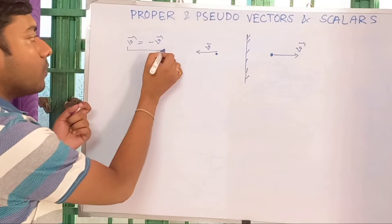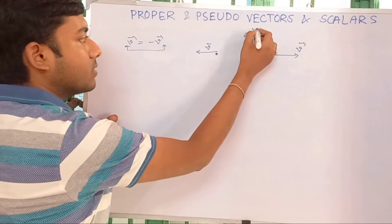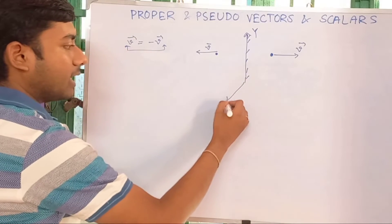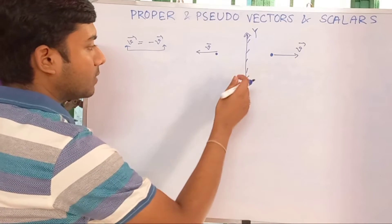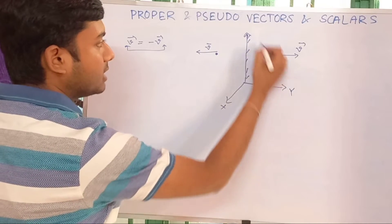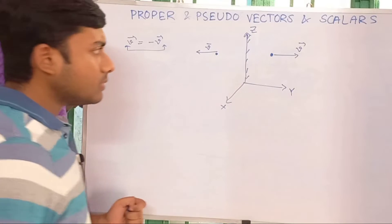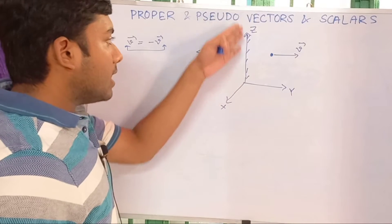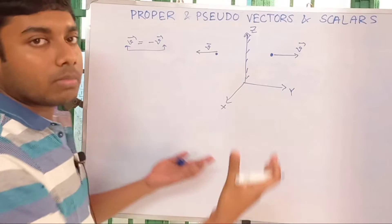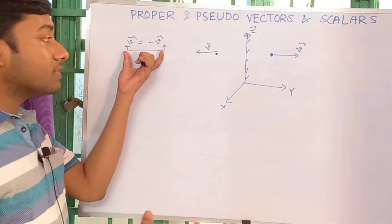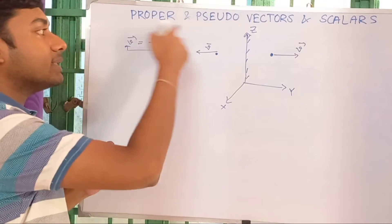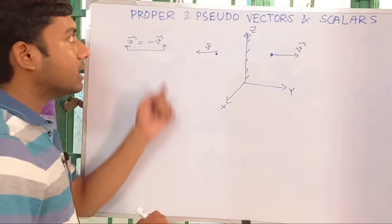Suppose this is our y-axis, x-axis, and z-axis. If the mirror is placed about the z-axis — in the xz-plane — then for normal vectors, if this type of transformation happens for any vector, then you can say that vector — like our velocity vector — is a proper vector.